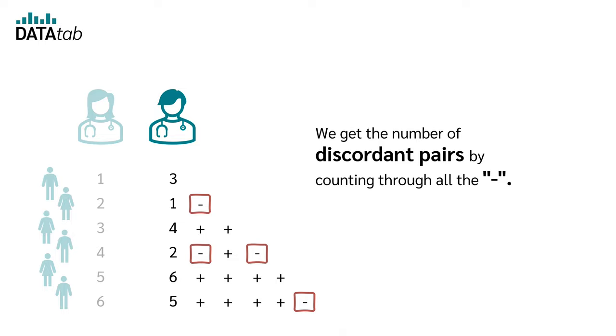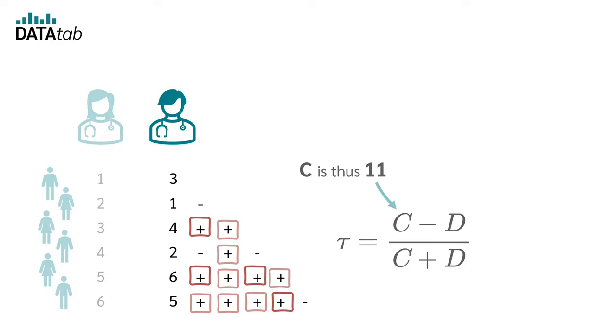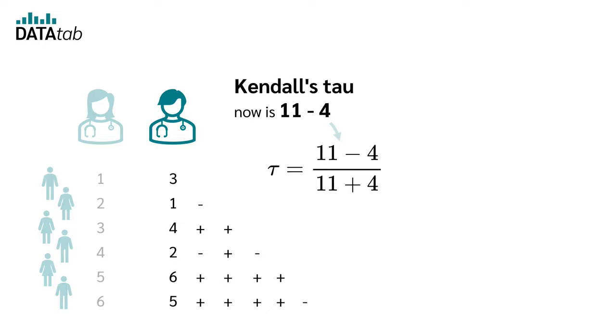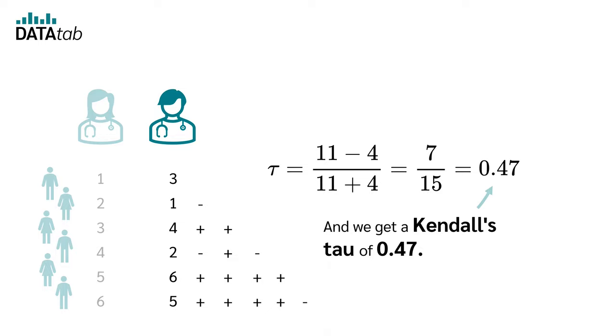four minus. C is thus eleven and D is four. Kendall's Tau now is eleven minus four divided by eleven plus four. And we get a Kendall's Tau of 0.47.